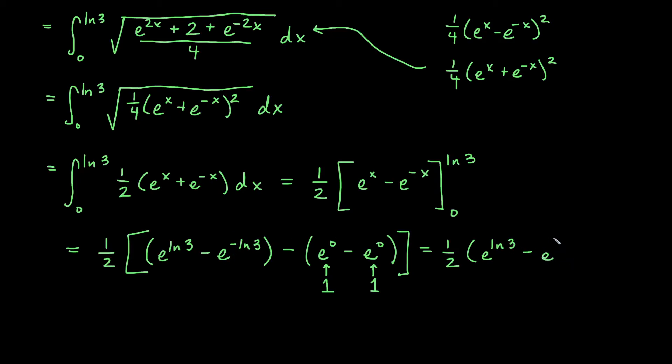I'm going to make e to the ln3 minus, and then if I bump this up, I'll do it in two steps. That'll be e to the ln of 3 to the minus 1. So using property of logs, we have bumped our coefficient of negative 1 up to be a power of what's inside of the log.